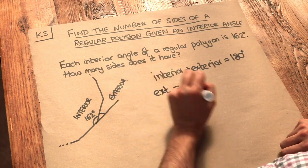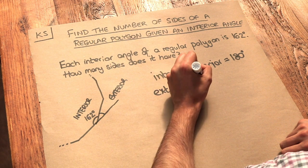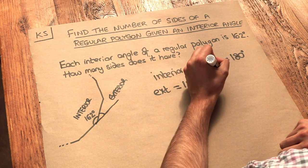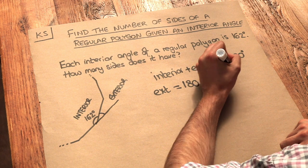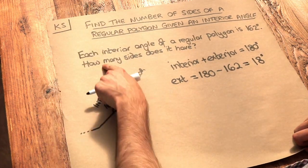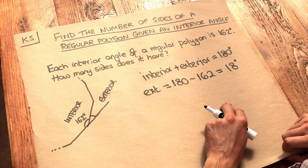And therefore the exterior angle is just going to be 180 minus 162 degrees is equal to 18 degrees. So the exterior angle of this polygon, this regular polygon, is 18 degrees.